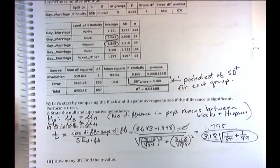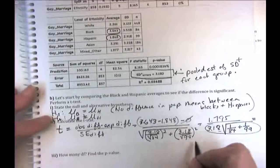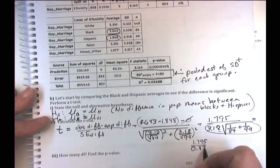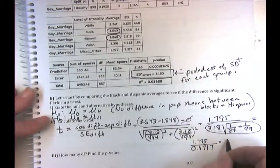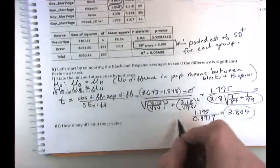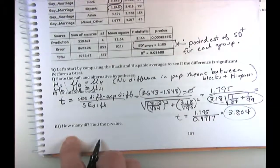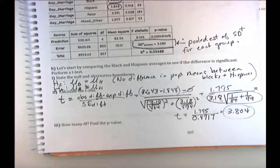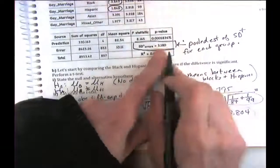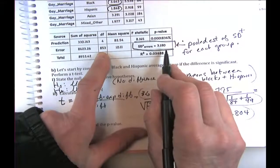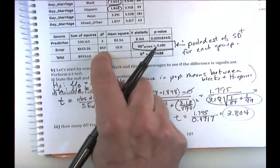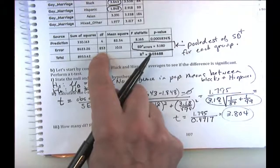The Bonferroni correction sets the individual test threshold at alpha divided by the number of comparisons — 0.05 over 10 equals 0.005. This is equivalent to multiplying each p-value by 10. With the corrected threshold, the probability of at least one false significant result becomes 1 minus 0.995 to the 10th power, which is approximately 4.9% — very close to our target 5%.